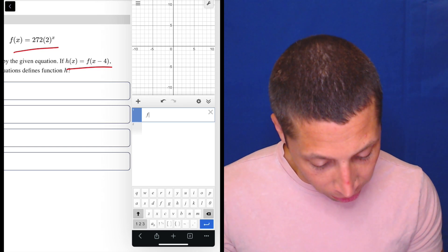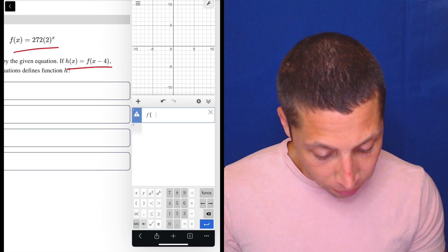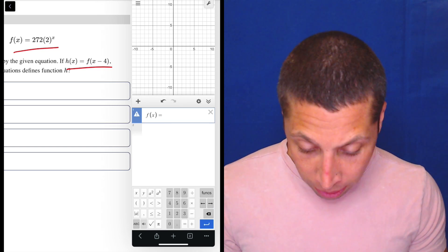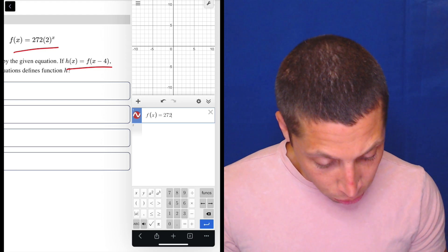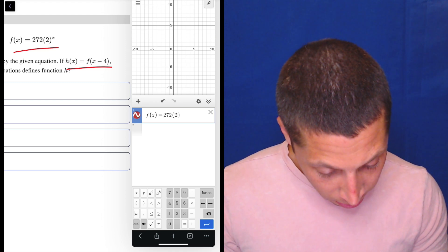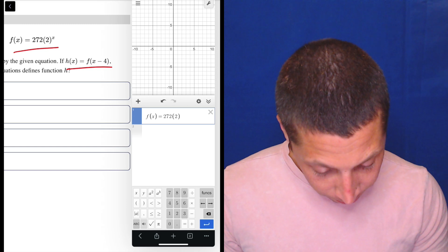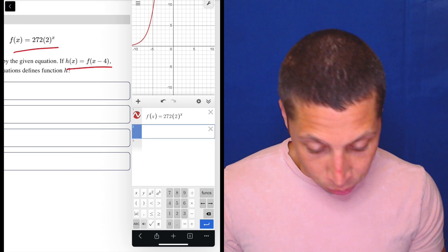I'll show it to you at the end, but oh my goodness, I just don't think it's worth it. So f of x is equal to 272 times 2 to the x. There we go. There's our f of x. What do they want?